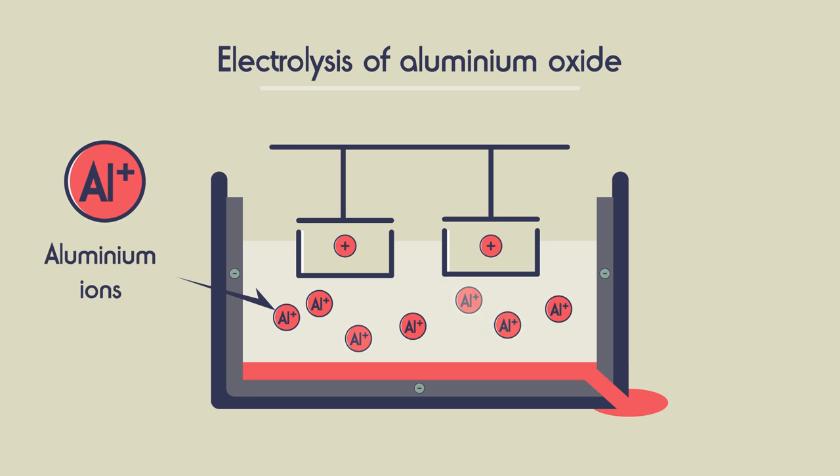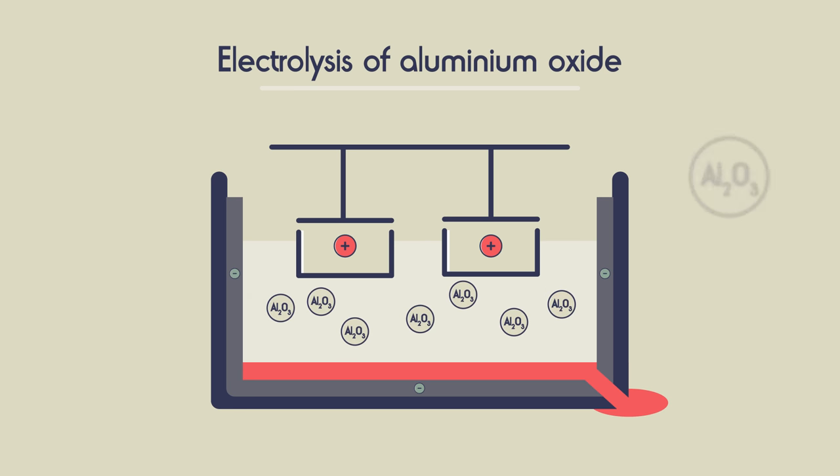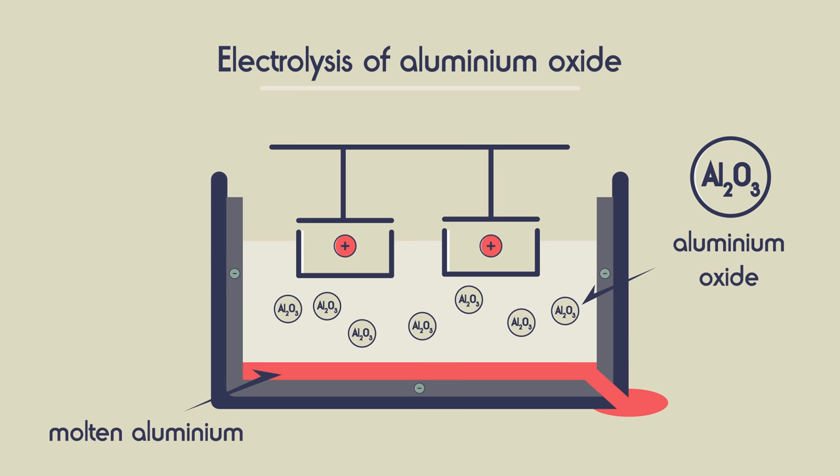In electrolysis, ions need to pass through the electrolyte and so the aluminium oxide must be made molten so that this can happen.